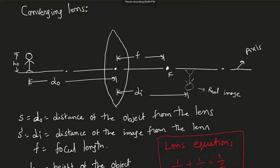In this video I'm going to talk about lenses. There are two types of lenses: one is a converging lens and the other is a diverging lens. A converging lens is thin at the edges and thick in the middle. Here the lens is placed on the axis — the x-axis — and an object is placed in front of the lens. I always take the left side as in front of the lens and the right side as behind the lens.